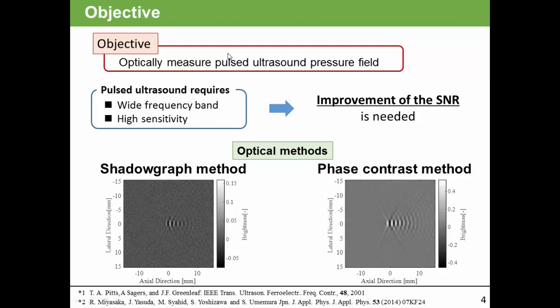The optical method for ultrasound field can be classified to two categories. One is shadowgraph method. The other is phase contrast method. For a pulse ultrasound pressure field in this study, phase contrast method has high SNR. So, we selected phase contrast method for measurement of pulsed ultrasound field.